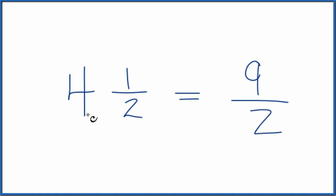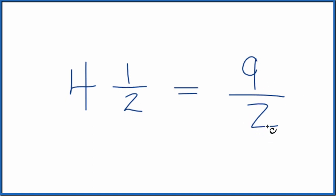So the mixed number four and one half equals the improper fraction nine halves, or nine over two.